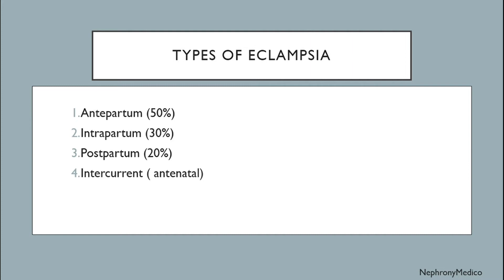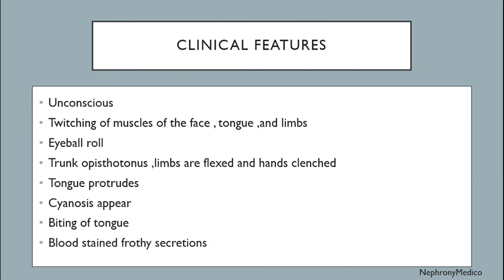Types of eclampsia: antepartum, intrapartum, postpartum, and intercurrent or antenatal. Clinical features include unconsciousness, twitching of muscles of the face, tongue and limbs, eyeball rolling, trunk opisthotonus, tonic limbs with flexed arms and clenched hands, tongue protrusion, cyanosis, and biting of the tongue.